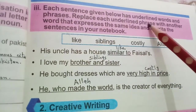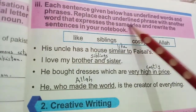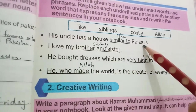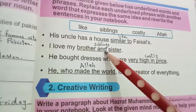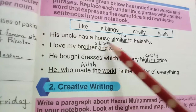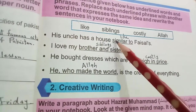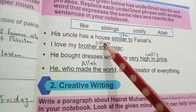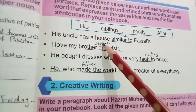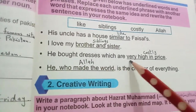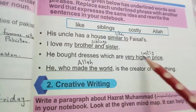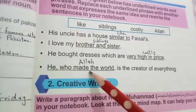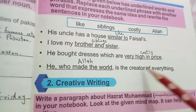Each sentence below has underlined words and phrases. Replace each underlined phrase with another word that expresses the same idea and rewrite the sentences. For example: 'His uncle has a house similar to a vessel' — replace with 'boat-shaped.' 'I like my brother and sister' — replace with 'siblings.' 'He bought items which are very high in price' — replace with 'costly.' 'He made the world' — replace with 'everything.'